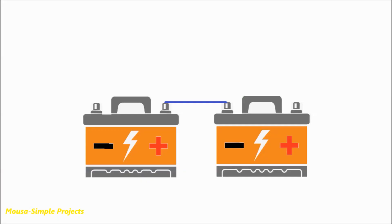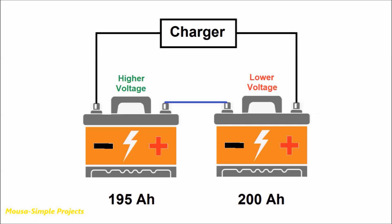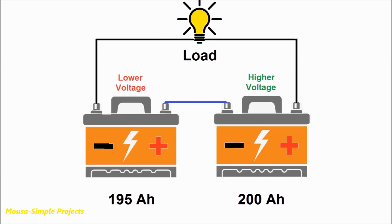The reason for that is because the real capacity of battery number one is slightly less than battery number two. Let's say the first battery is 195 amp-hours and the other is 200 amp-hours. So that means when you charge them together, the first battery gets fully charged before the other. But when you start to discharge them, this time the voltage of the first battery drops faster than the other because it has less capacity and drains faster.